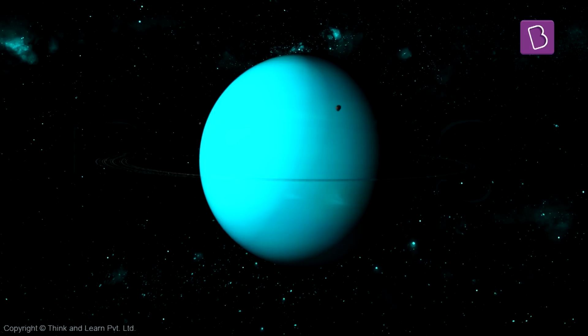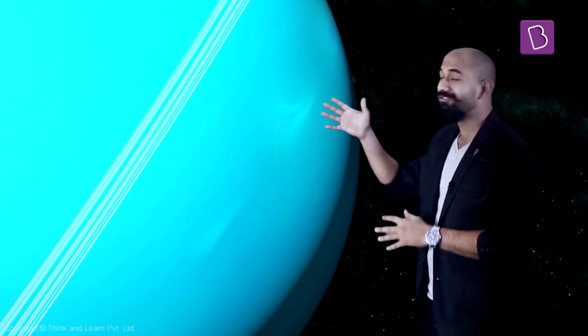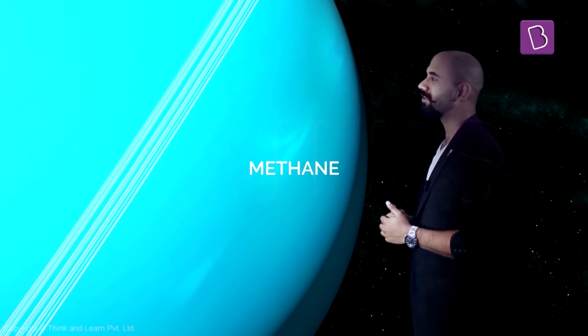The funny thing about Uranus is that it's the only planet with an axis of rotation that is almost horizontal. Those blue clouds that you see are made of a gas called methane. Uranus is also the first planet to have been discovered using the telescope.